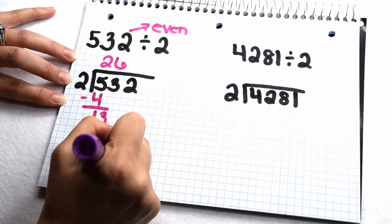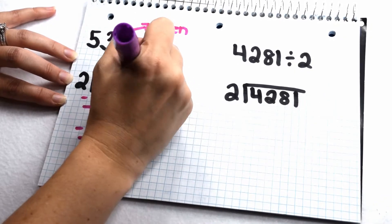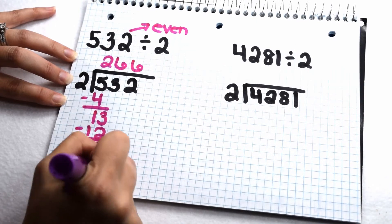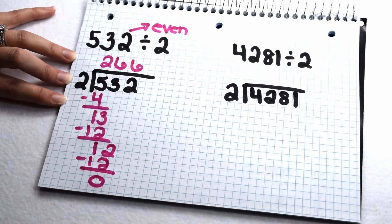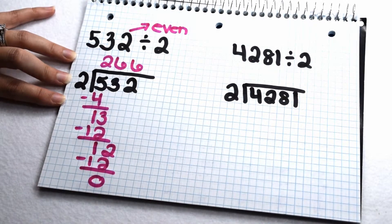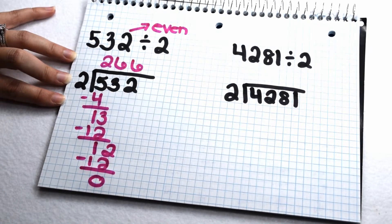That leaves me with 1. Bring down my other 2. 2 goes into 12 six times again, subtract my 12, and I'm left with nothing. So 532 divided by 2 does come out to be exactly 266 with no remainders.